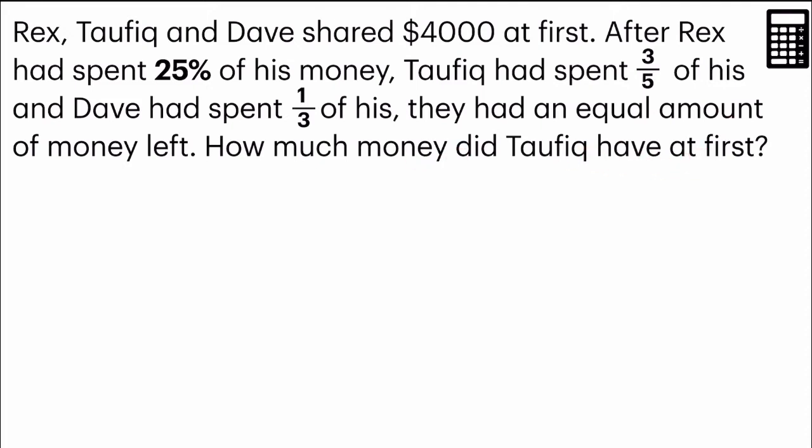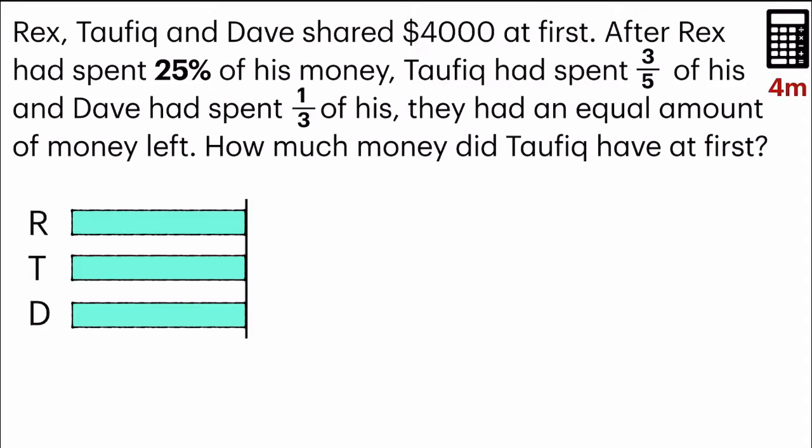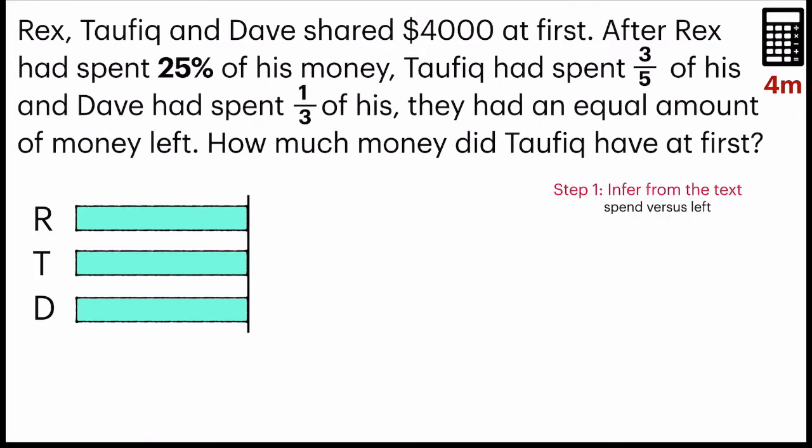So this is a before and after question and I know after they had an equal amount of money left. So for my model, I have drawn 3 chunks for the 3 boys. Step 1, we have to make some inference from the text. First, we know that the 3 boys shared $4,000 but we do not know the amount of money that they have at first were equal.